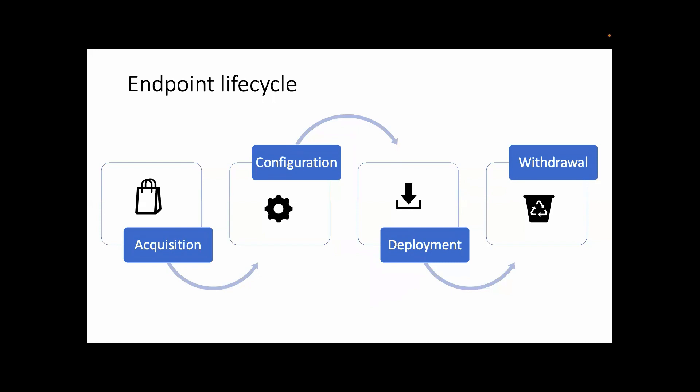Looking at the life cycle of an endpoint, there are four major stages. The first stage is acquisition, where you decide what you need, assess what's out there, decide what to buy, and get budget approval. Then you configure it, which is where imaging comes in. The third stage is deployment — actually getting that endpoint working in your organisation. And the fourth point is withdrawal: once that endpoint reaches the end of its life, you need a plan for removing and replacing it.